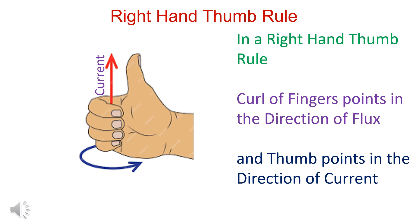In case of right-hand thumb rule, curl of fingers points in the direction of current or flux. Curl of fingers points in the direction of flux.